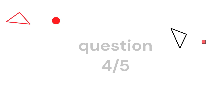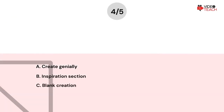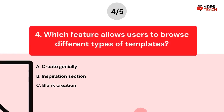Question number four. Which feature allows users to browse different types of templates? Option A: Create Genially. Option B: Inspiration section. Option C: Blank creation. Now you have about 15 seconds to think about your answer.